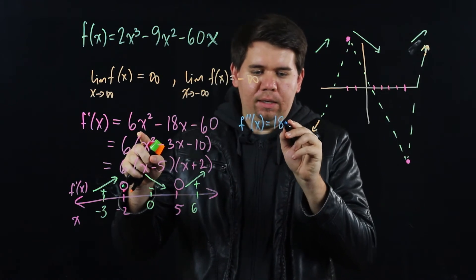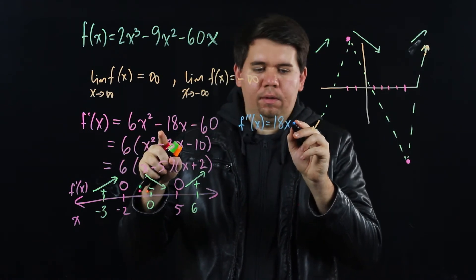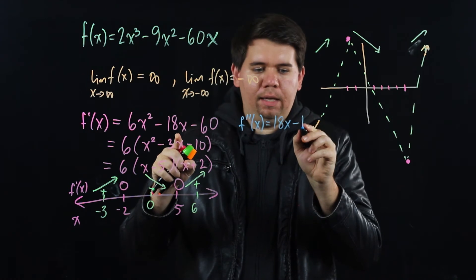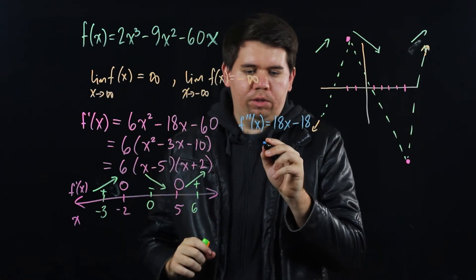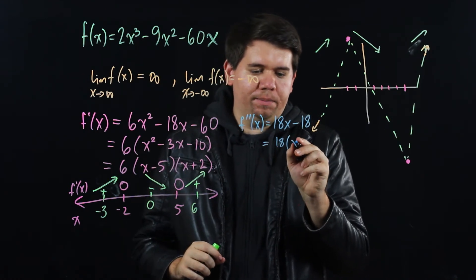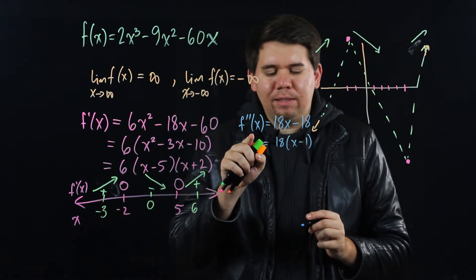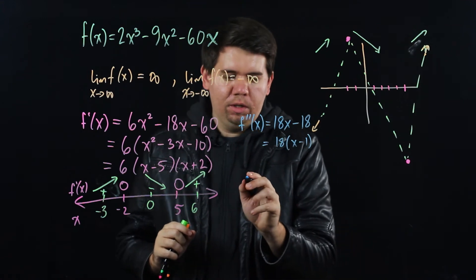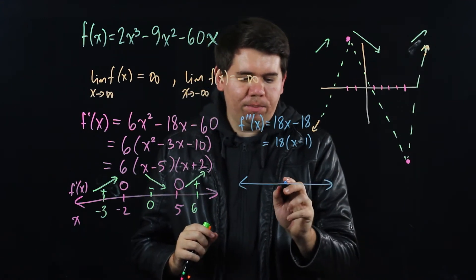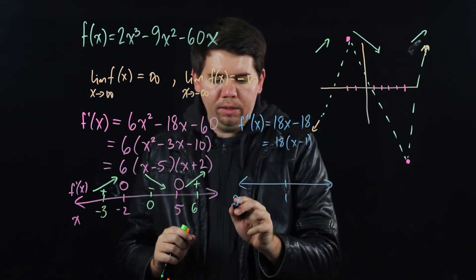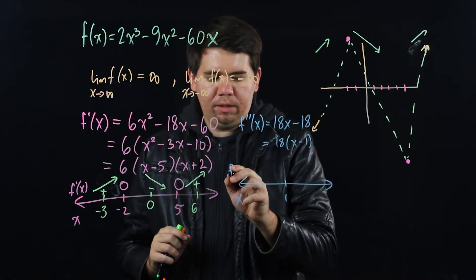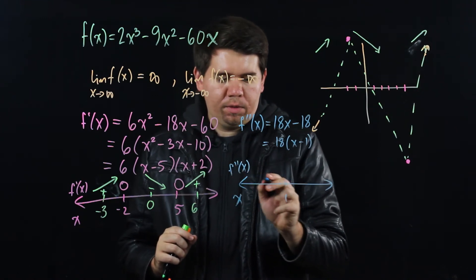It's going to be 12x minus 18, which if you pull out 6, it's just 18 times x minus 1. But it's pretty clear what's happening. The second derivative is 0 at 1. So if I was to do a little number line, the special number now is at 1. When x is 1, my second derivative is 0.